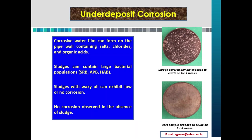Under deposit corrosion: corrosive water film can form on the pipe wall containing salts, chlorides and organic acids. Sludges can contain large bacterial populations — sulfate-producing bacteria, acid-producing bacteria and heterotrophic aerobic bacteria. Sludges with waxy oil can exhibit low or no corrosion. No corrosion was observed in the absence of sludge. The image shows a sludge-covered coupon exposed to crude oil for 4 weeks.